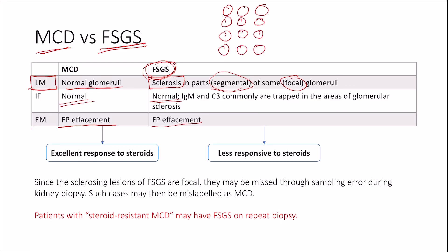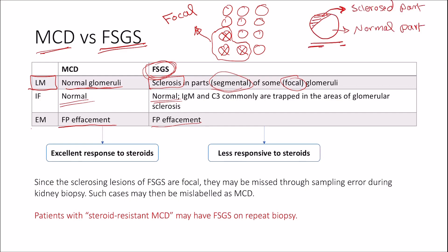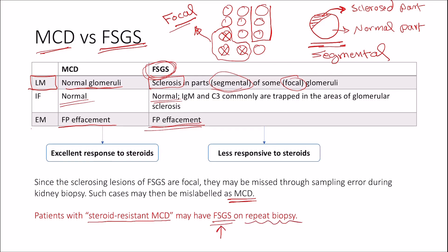Imagine having multiple glomeruli. In focal segmental glomerulosclerosis, the sclerosis is focal — meaning it affects some but not all glomeruli — and also segmental, meaning the affected glomerulus is only partially affected. Since the sclerosis lesions are focal, they may be missed through sampling error on kidney biopsy. You may sample only the normal glomeruli, and in this case you'll have normal glomeruli on light microscopy with effacement on electron microscopy, leading to mislabeling the case as minimal change disease. That's why a significant portion of patients with steroid-resistant minimal change disease have focal segmental glomerulosclerosis on repeat biopsy — they probably had FSGS from the start, with the correct diagnosis being missed through sampling error during the initial biopsy.